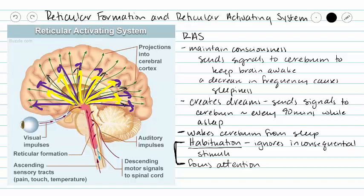If you cannot wake from sleep, that is called a coma. The flip side is insomnia, where you are maintaining consciousness at too high a level. In between those two is narcolepsy, where you randomly stop maintaining consciousness and fall asleep without intending to. These sleep disorders and comas all relate to dysfunction of the reticular activating system.